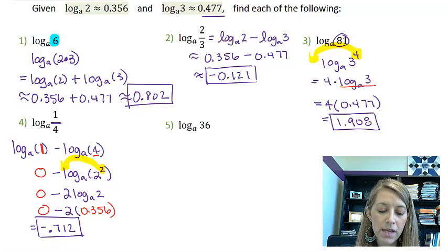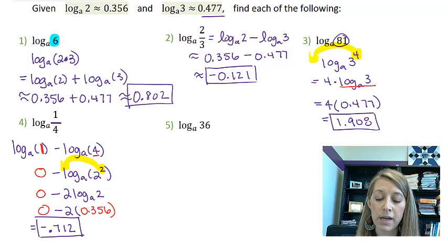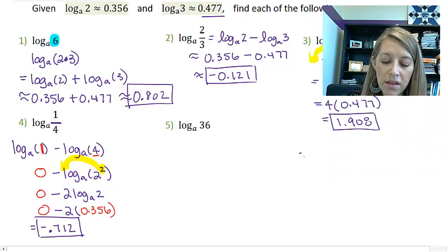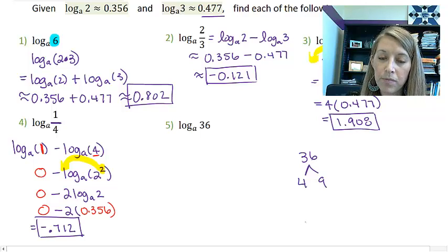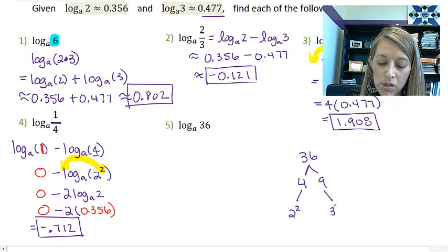And of course, I always leave the most difficult example for the last. The hint to this one is change 36 into its prime factorization. So break it down into the smallest factors that you possibly can. So if I think of 36, I might think of that as 4 times 9. And then I can think of 4 as 2 times 2 or 2 squared. And I can think of 9 as 3 times 3 or 3 squared.